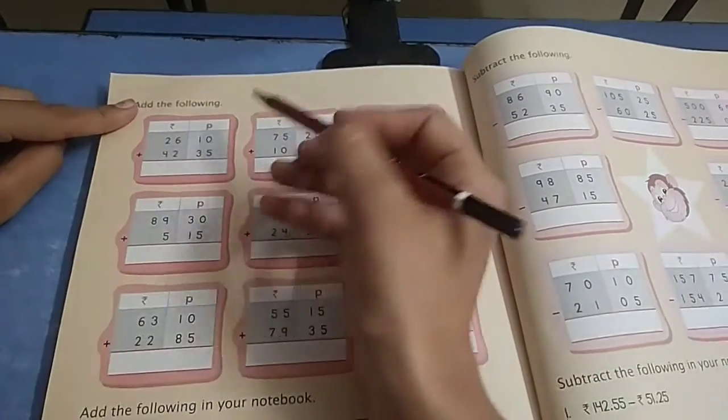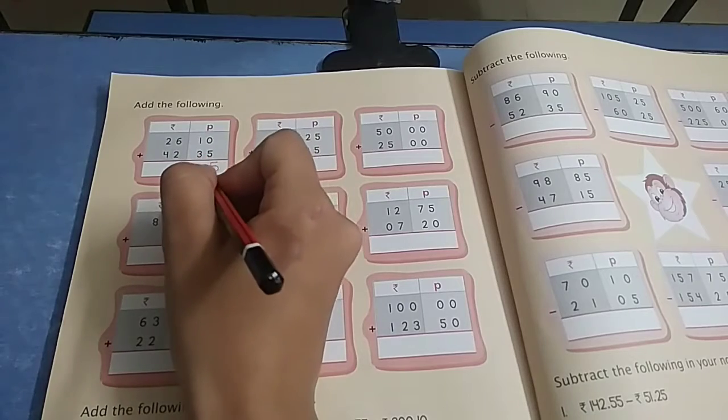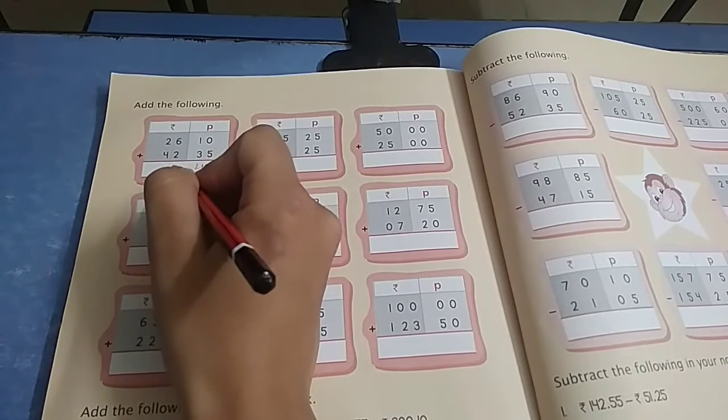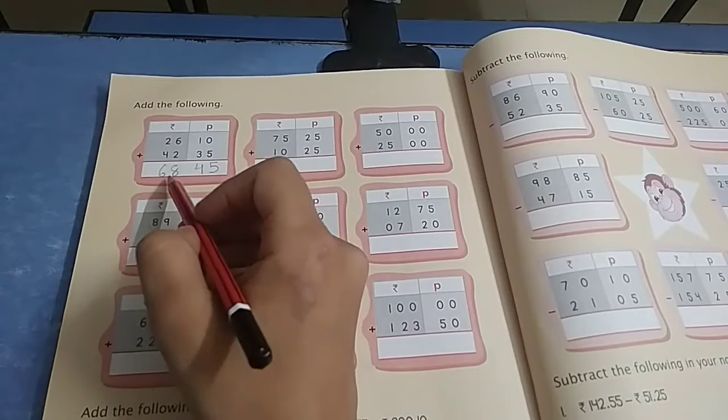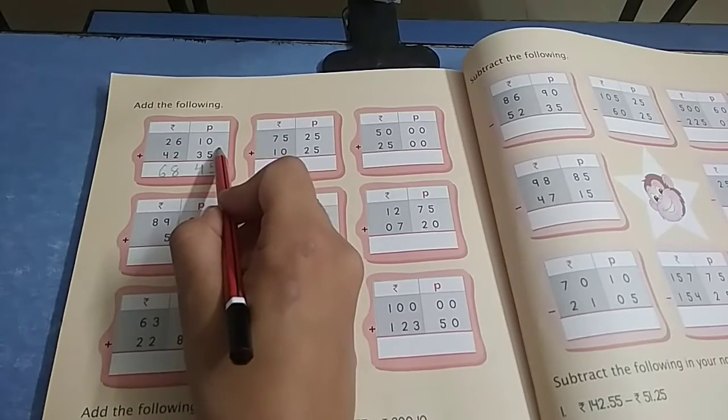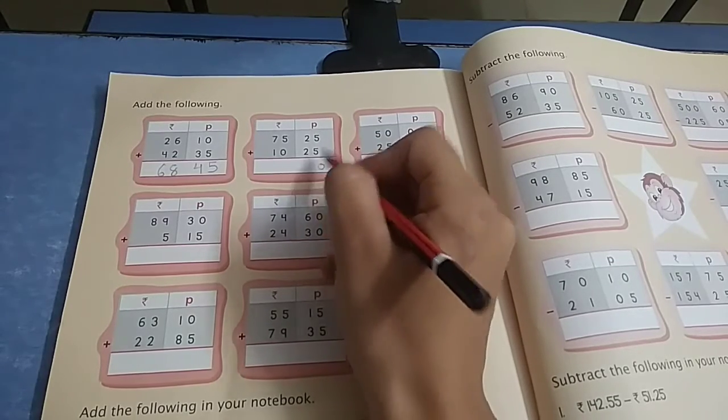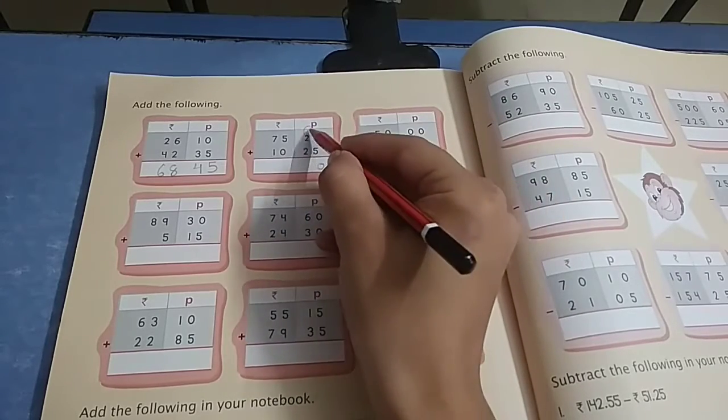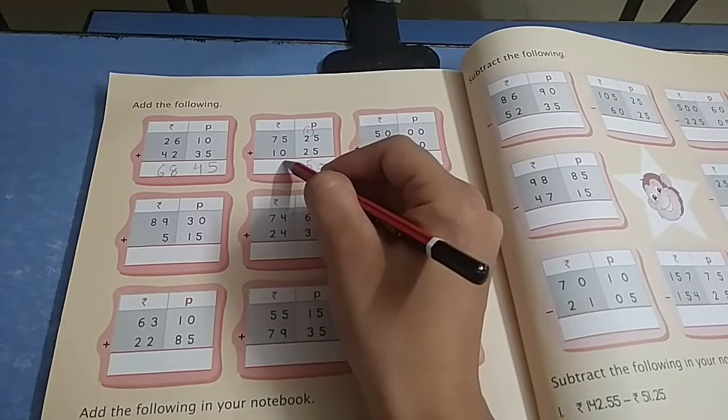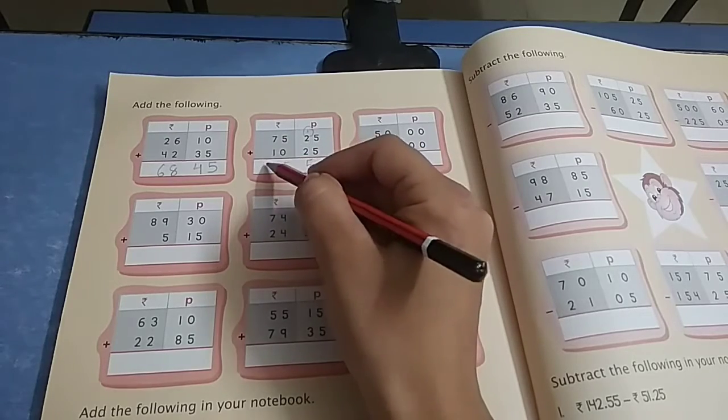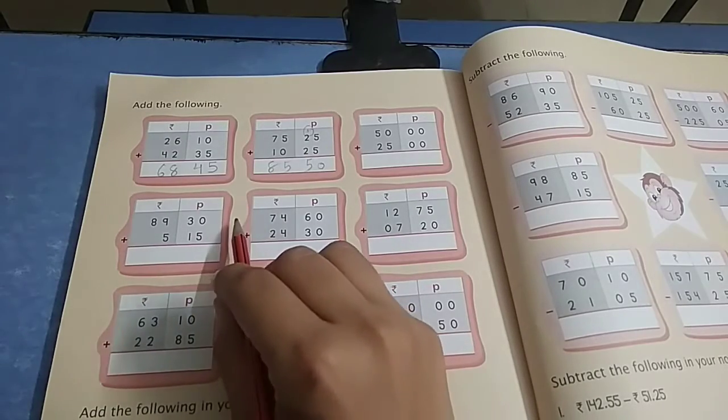Now come to the next page. Let's start. Add the following: 0 plus 5 is 5, 1 plus 3 is 4, 6 plus 2 is 8, 2 plus 4 is 6. Is it clear? You have 68 rupees 45 paise. Next: 5 plus 5 is 10, write 0 here and carry over 1. 1 plus 2 is 3, 3 plus 2 is 5, 5 plus 0 is 5, 7 plus 1 is 8.